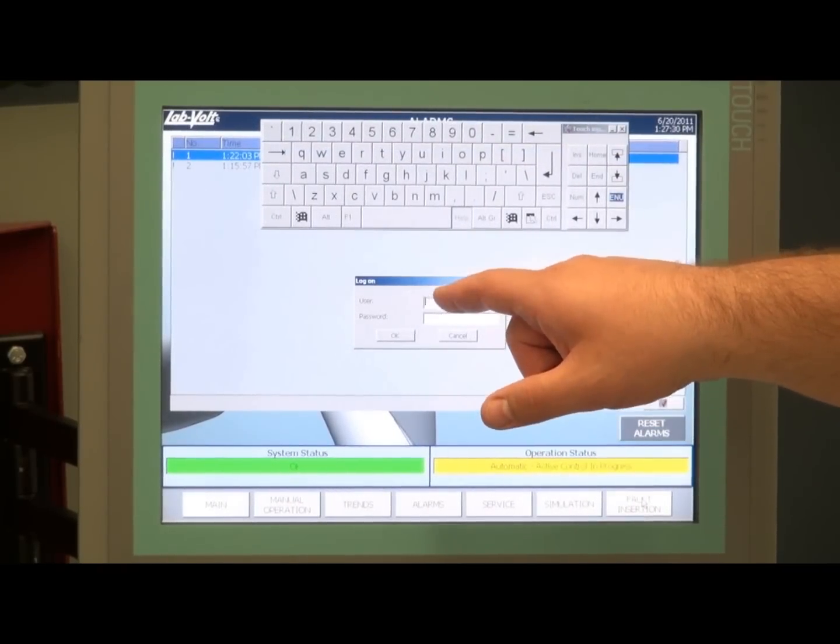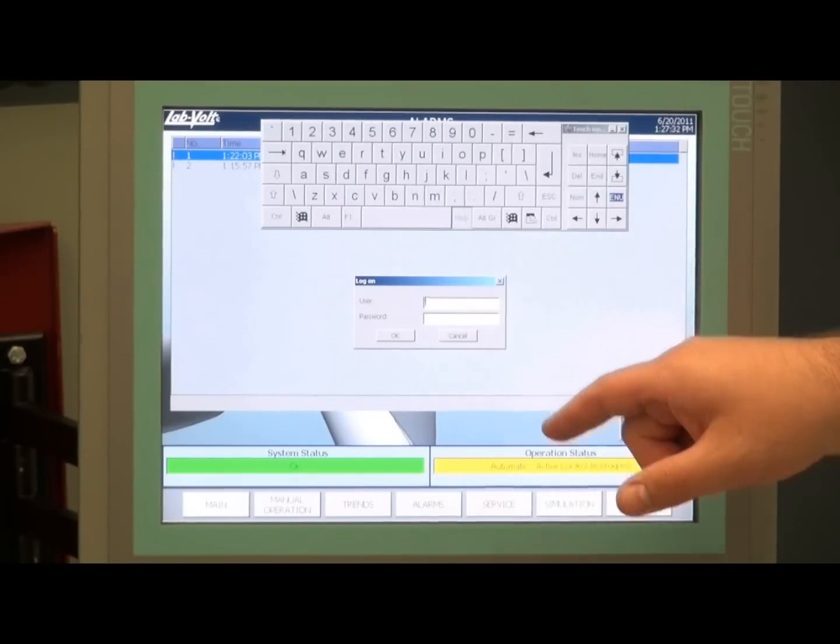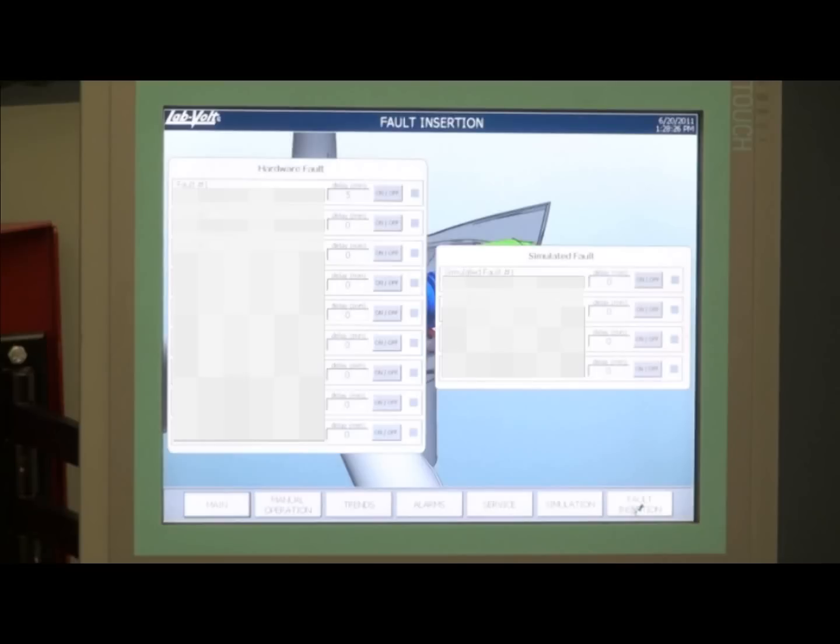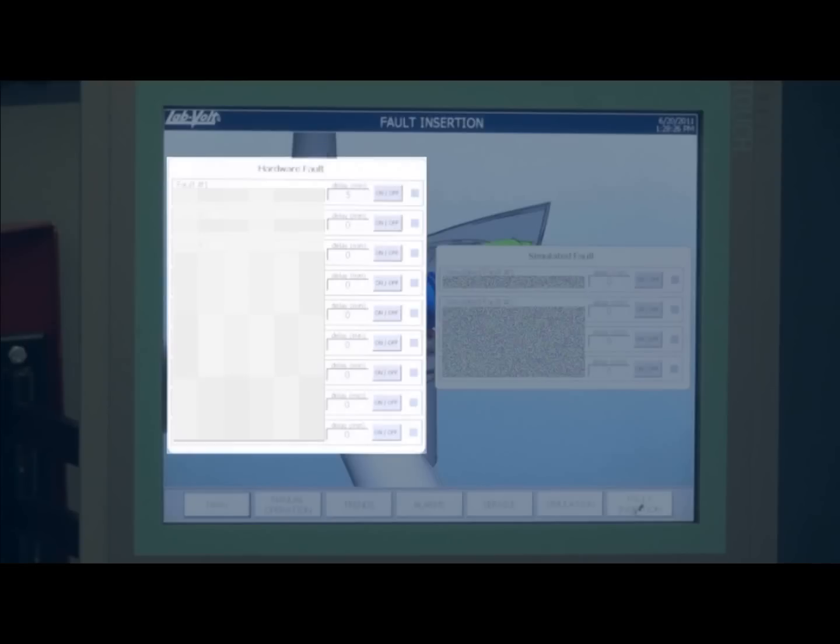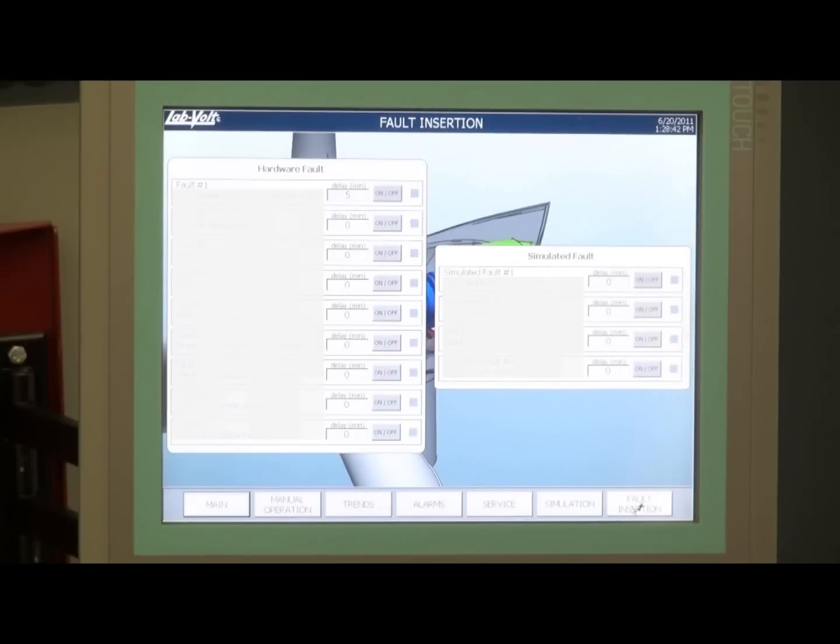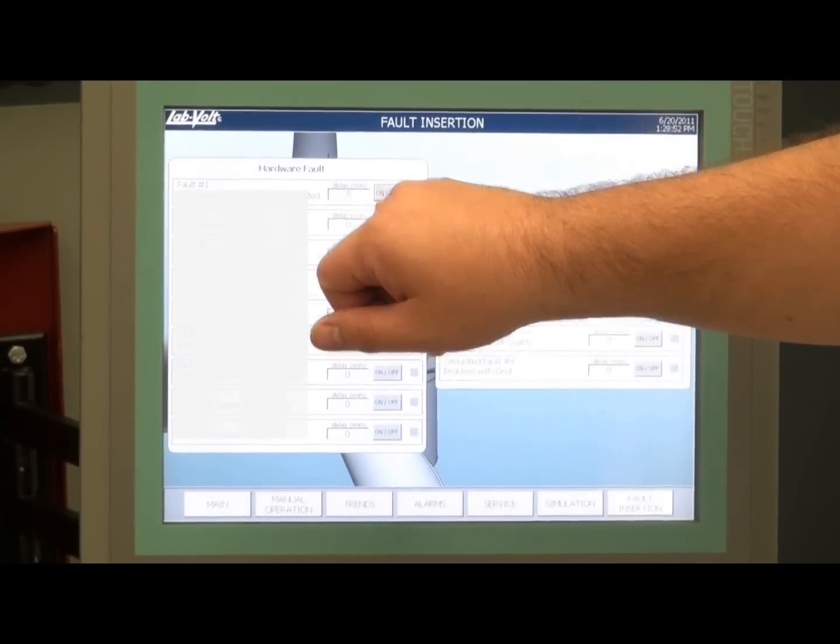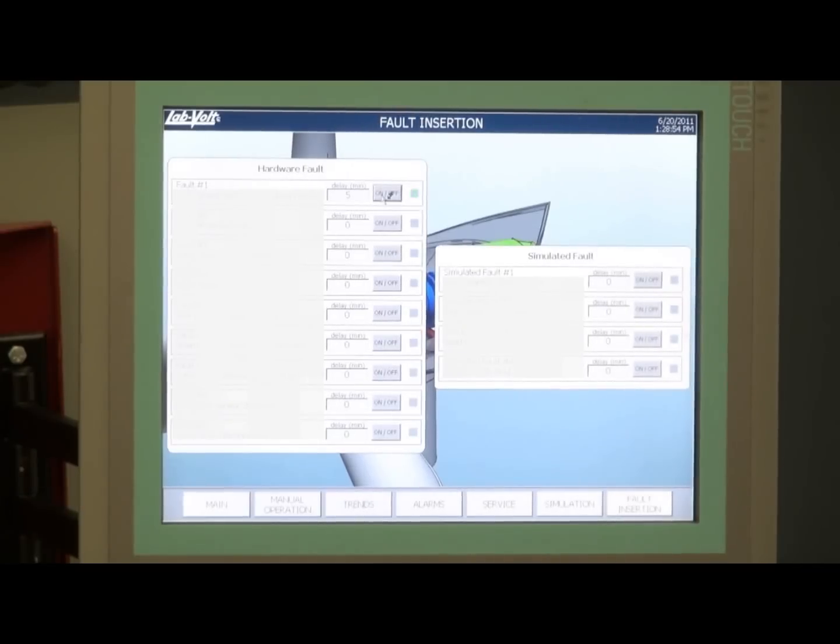A fault section is also available for teachers, where you have to enter a username and password, which are normally given by the teacher. Once the username and password have been entered, you can go to the fault insertion section, and you have a series of hardware faults, which are normally open contacts in the electrical panel, or simulated faults, like gearbox high temperature, or bad oil quality in the gearbox. The teacher can set a delay to when this fault will happen in the system, and then press the on-off button to activate that fault, and it will take place in the delay set by the teacher.